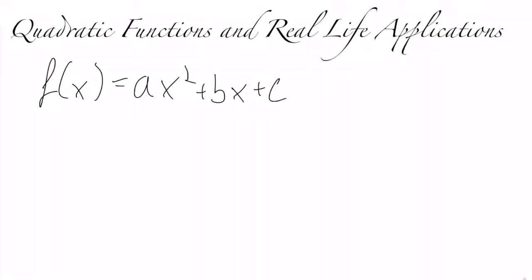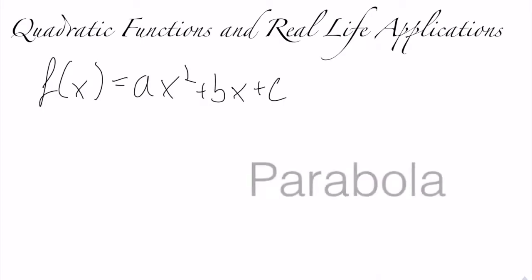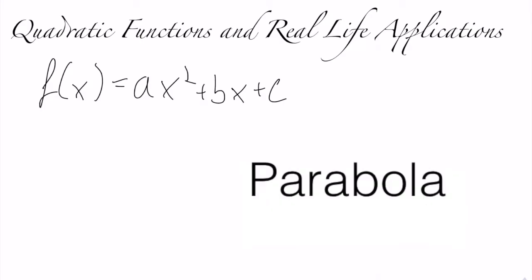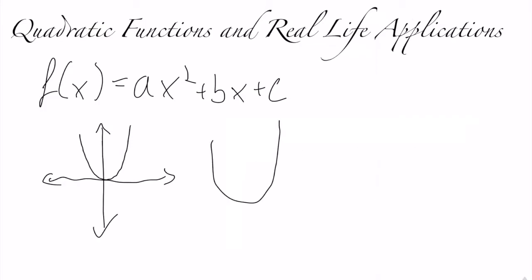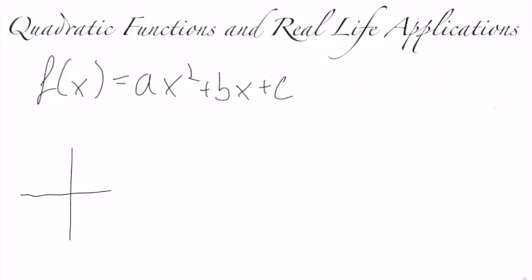The result of this function or equation is always the shape called a parabola, which can be drawn as such. The parabola is always of the u-shape. In any quadratic function, a could either be one of two things: positive or negative.